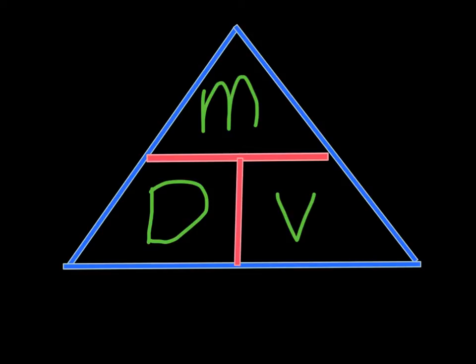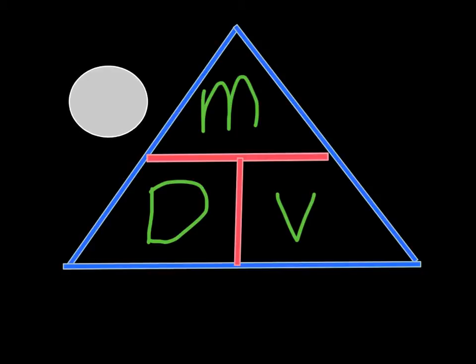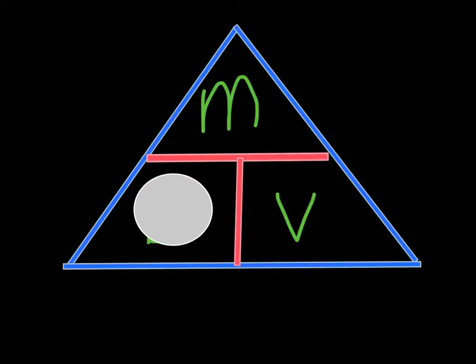This triangle represents a way to look at the density equation and help you solve for mass, volume, or density. What you do is you put your thumb on the term that you're solving for. In this case, density, which is the one I covered up with the circle, equals mass over volume. You can see that you have mass here and you have volume here.